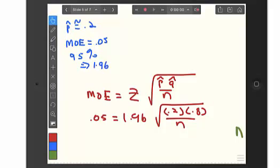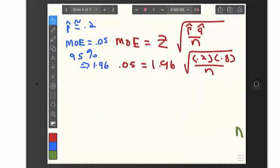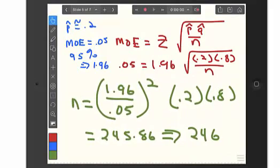And, then we can just plug things in. So, for the margin of error, 0.05, the Z value of 1.96, and then P hat of 0.2, and then 1 minus that, or 0.8, for the Q hat. And, then again, it's just some calculations from there.